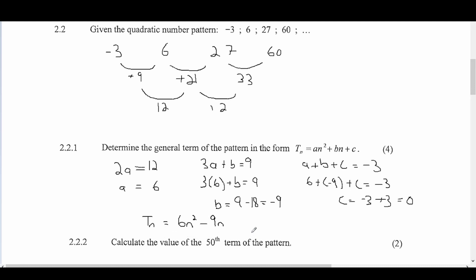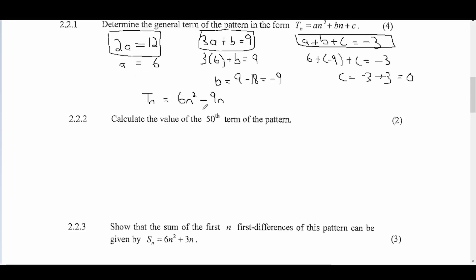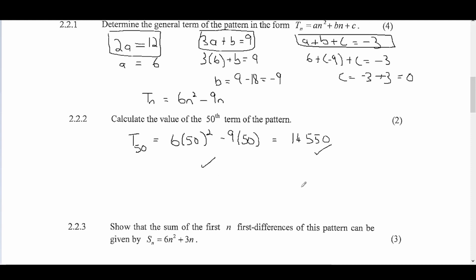Next, calculate the 50th term. We leave the formula up and substitute n equals 50: T(50) equals 6 times 50 squared minus 9 times 50. Typing this into your calculator gives the value 14,550. You get one mark for the substitution and one mark for the answer.